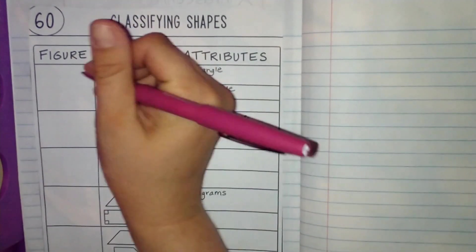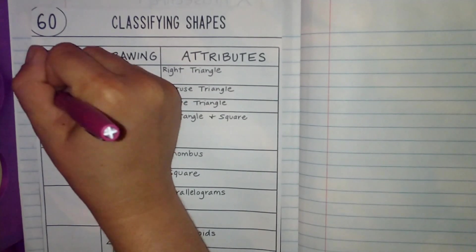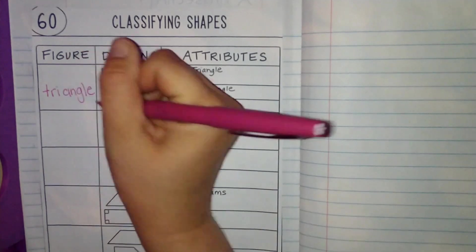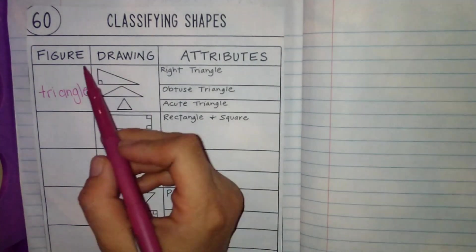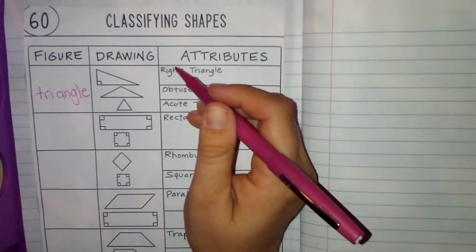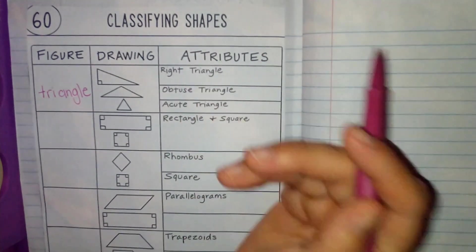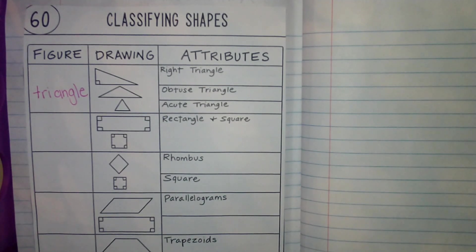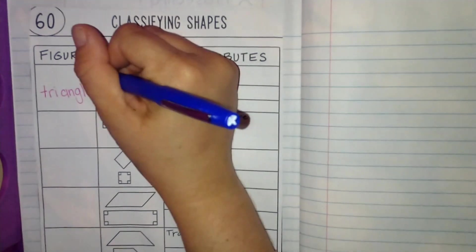So this is a triangle — 'tri' meaning three, 'angle' meaning angle. We have three angles. There are three different kinds of triangles. I'm going to color-coat this for you so you can see the differences and match the different kinds of triangles with the different definitions, but you do not have to do that.